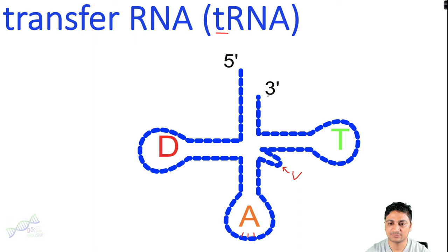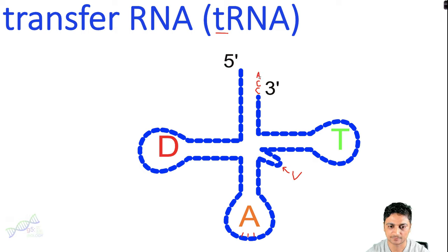Towards the three prime end of tRNA there are always three nucleotides: two cytosine molecules followed by one adenosine molecule. tRNA is typically around 80 to 100 nucleotides long.